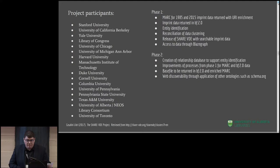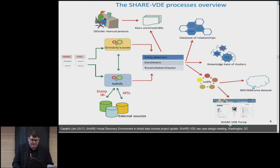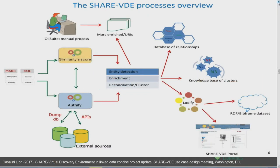Another further deliverable was web discoverability through application of other ontologies such as schema.org. The general process for the ShareVDE project can be broken into two main areas. The first being the Authify process. It's worth noting that they start with the MARC data for a lot of their work with clustering, entity detection, and enrichment, and a tool called Relator Term Detection, where they use text mining to add relator terms to a range of different pieces of data.